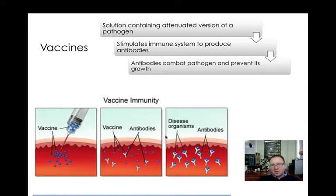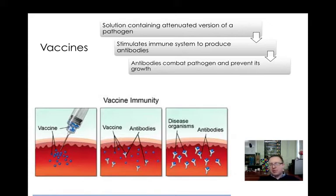Once those disease organisms — which are very similar to the vaccine particle — enter the system, antibodies are produced right away and the immune system can fight that off. Vaccines have been around for a very long time and their discovery was a critical turning point in our fight against smallpox. You may recall we did an activity earlier this semester about smallpox. I'm going to show you a video clip that shows how vaccination against smallpox was first discovered.